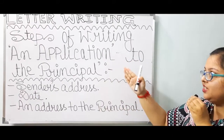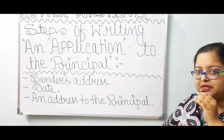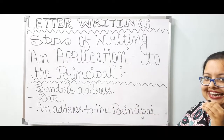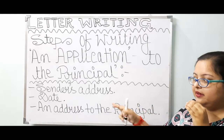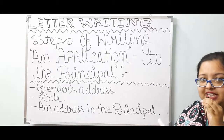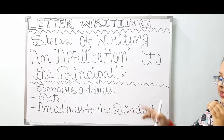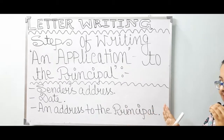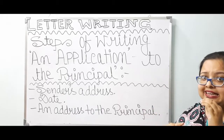Now, steps of writing an application to the principal. First, you have to mention the sender's address — if you are sending that letter, your address should be mentioned. Then leave one line gap and put today's date or the specific date on which you are writing that letter. Next, leave another gap and address the principal by writing 'To' followed by 'The Principal' on the next line.